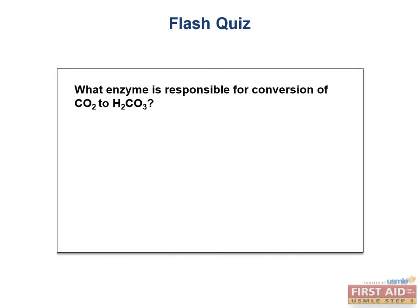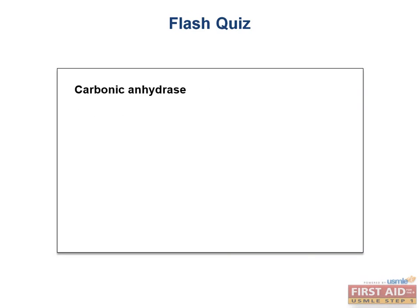Flash quiz: What is the enzyme responsible for the conversion of carbon dioxide and water to carbonic acid and eventually bicarbonate inside the RBC? The answer is carbonic anhydrase. It was covered in previous chapters and is an important enzyme to commit to memory for hematology, renal, respiratory, and many other sections of Step 1. This is a pretty high yield enzyme.